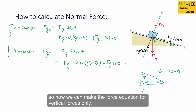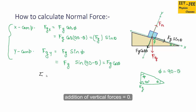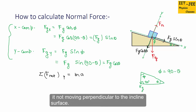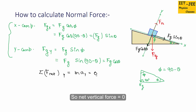Now we can write the force equation for vertical forces only. There are two vertical forces: first is fn and second is fg·cos(theta). The box is not moving perpendicular to the inclined surface, so the vertical acceleration is zero, meaning the net vertical force equals zero.